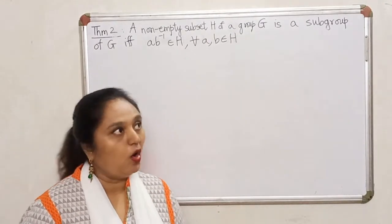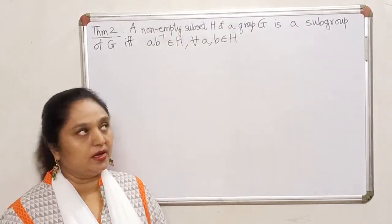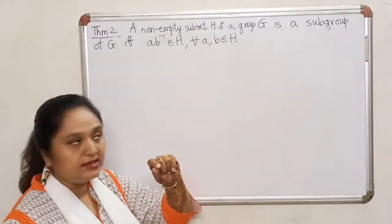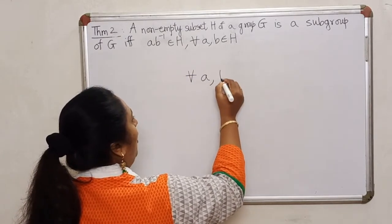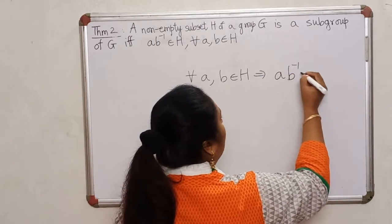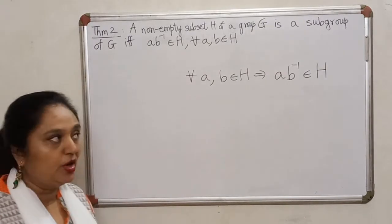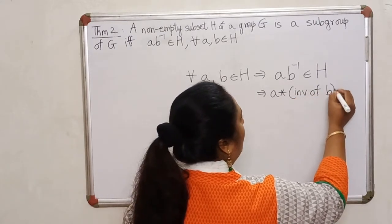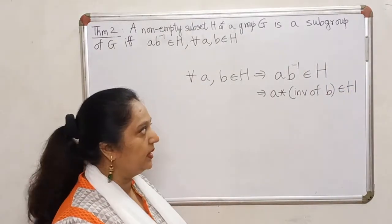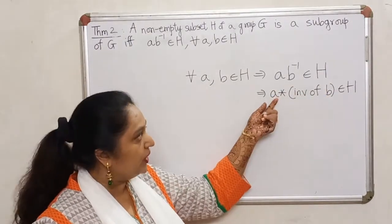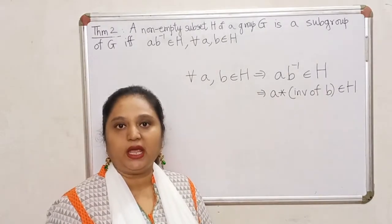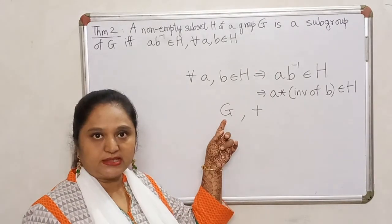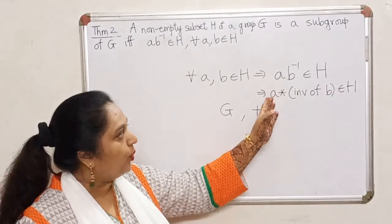Look at Theorem 2 again. Apart from showing the set is non-empty by verifying that identity lies inside H, the condition to be satisfied is: for all A, B in H, A★(B inverse) must also lie inside H. To compute this element, you must first take the inverse of B and then combine that with A.